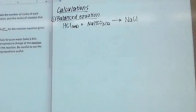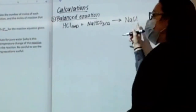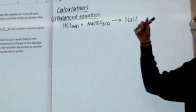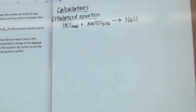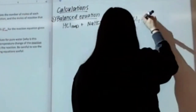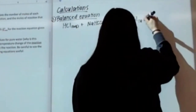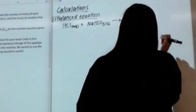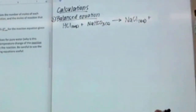NaCl is ionic — it's a salt. But because it has Na+ in it and it was in solution, NaCl was aqueous. It has to be aqueous.